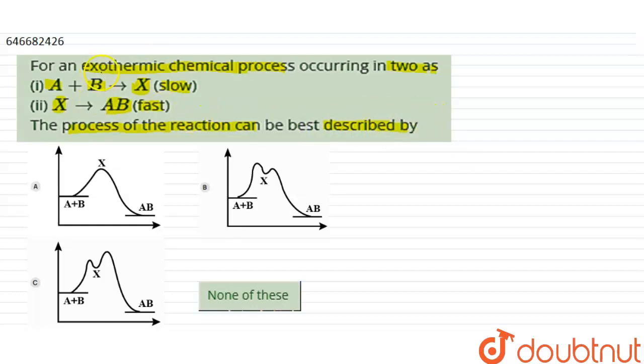So firstly, we will consider this is an exothermic reaction, so the energy of reactant will be higher than the energy of product. So this is the energy of reactant and this is the energy for product. In each case, the energy of reactant is greater than energy of product.